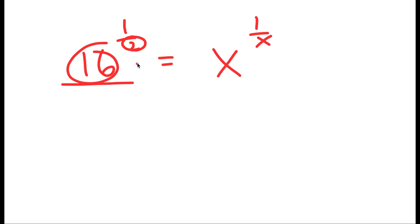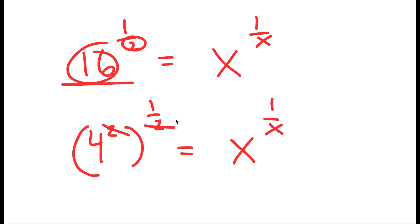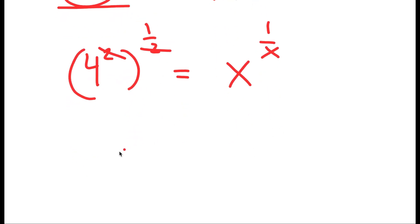To do that, 16 is the same thing as 4 squared. So I'm going to rewrite it as 4 squared. So I have 4 squared to the power of 1 half is equal to x to the power of 1 over x. And now remember, these two multiply — 2 times 1 half is just 1. So I'm left with 4 is equal to x to the power of 1 over x.